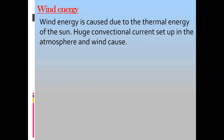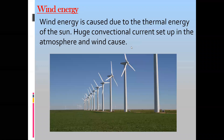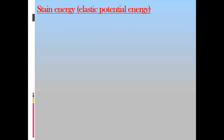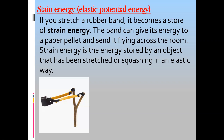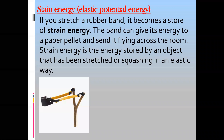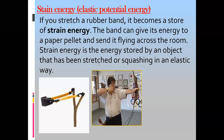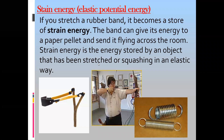Wind energy is energy due to moving air current or conventional current of air movement. Strain energy - when an object deforms or changes its length, shape, or size when we apply force, the energy stored in the object is known as elastic strain energy.